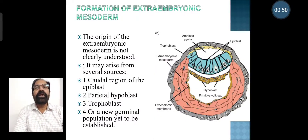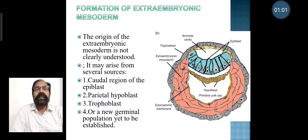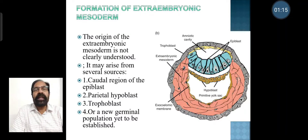Coming to formation of extra embryonic mesoderm, the origin of the extra embryonic mesoderm is not clearly understood. It is said it may arise from several sources: that is the caudal region of epiblast, parietal hypoblast, trophoblast, or a new germinal population had to be established.